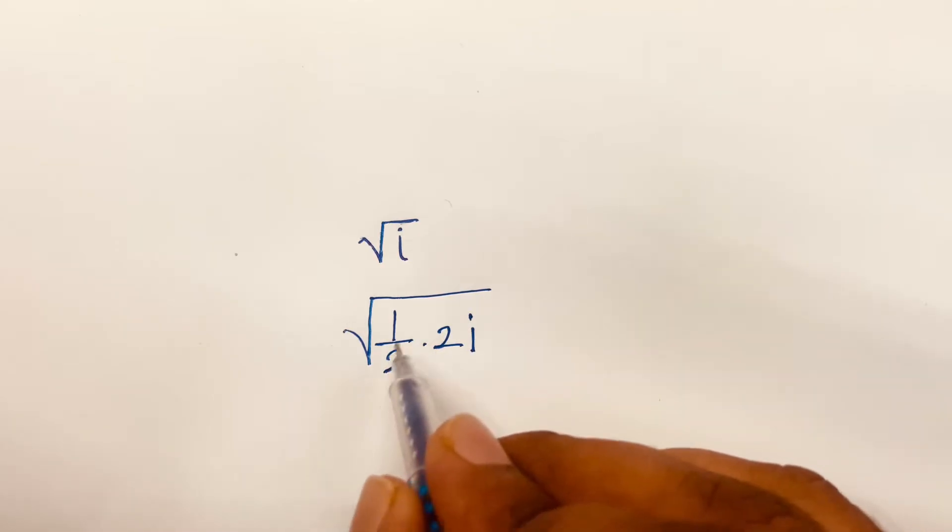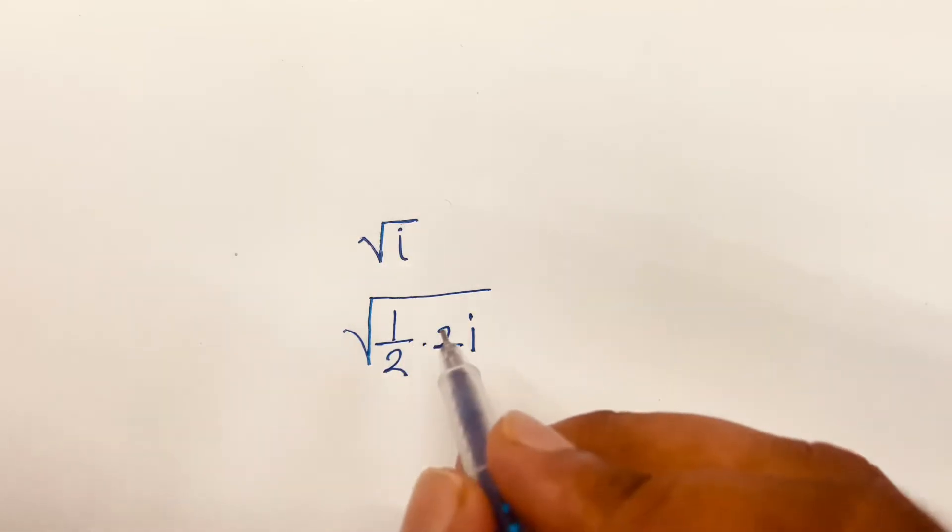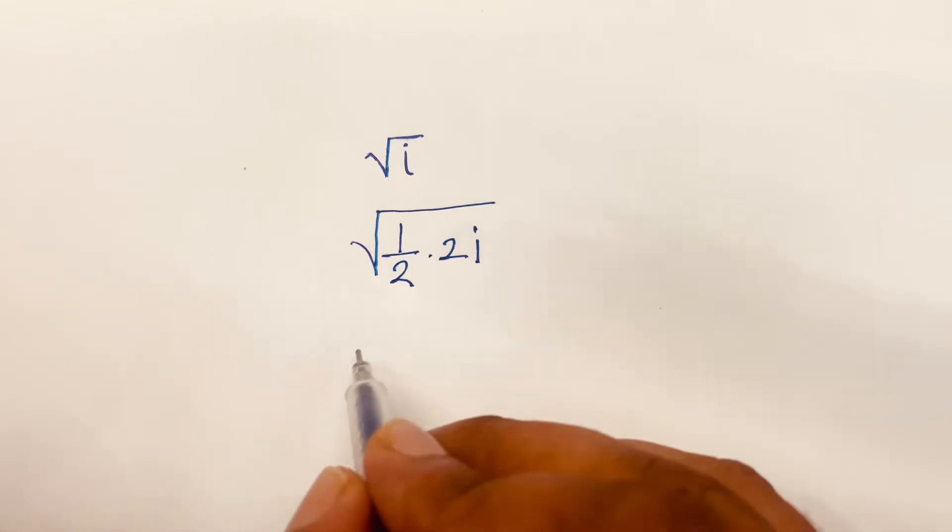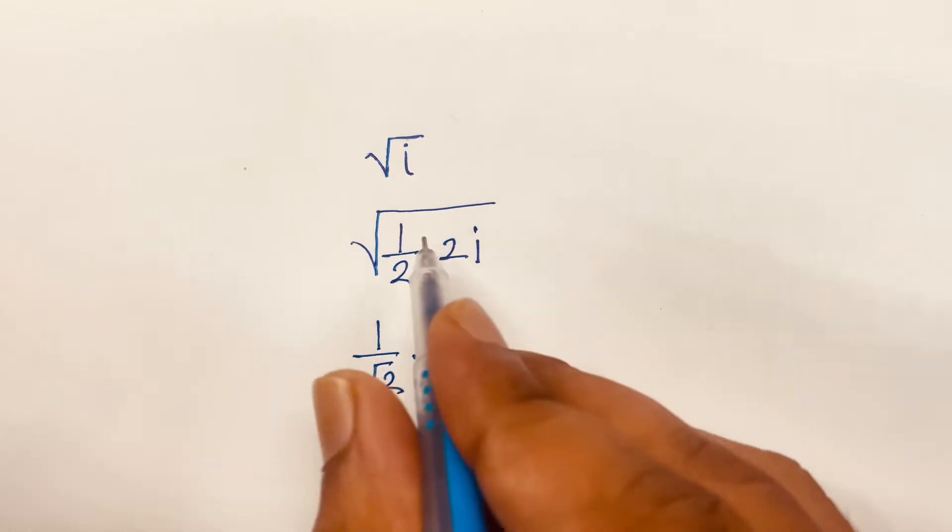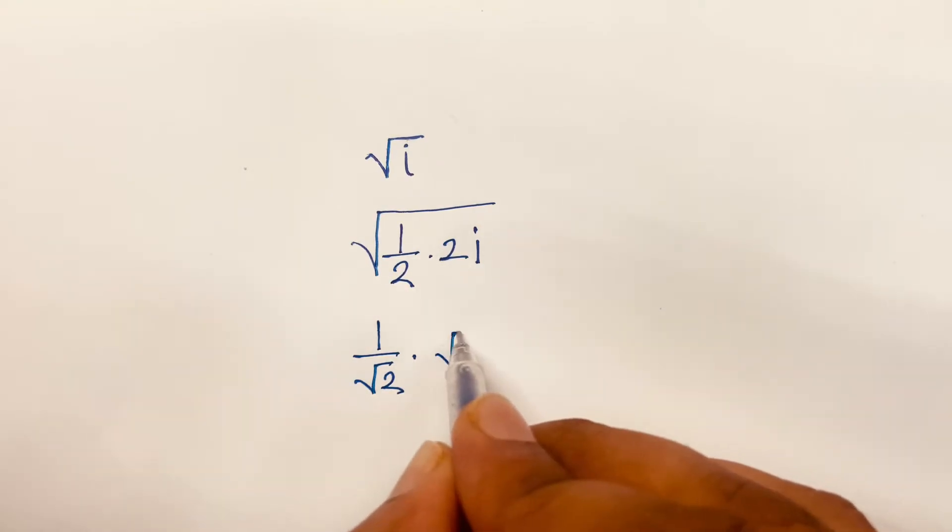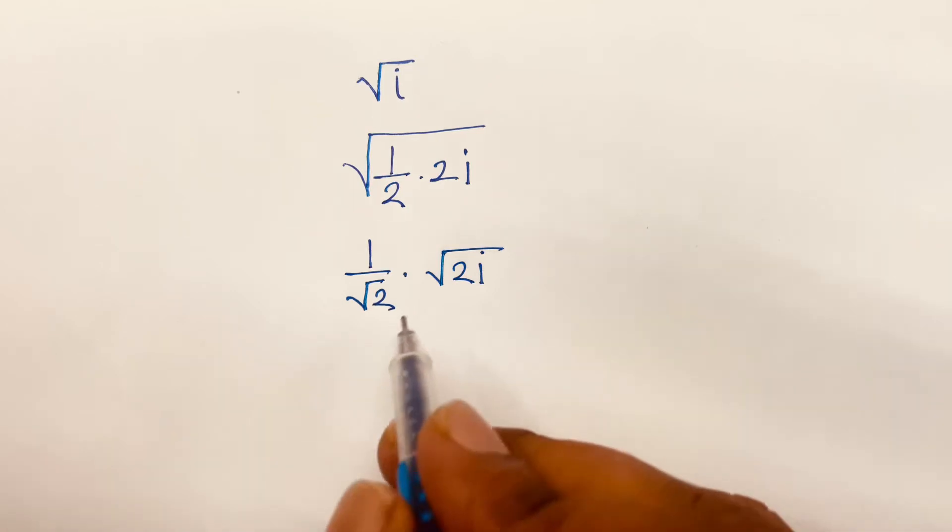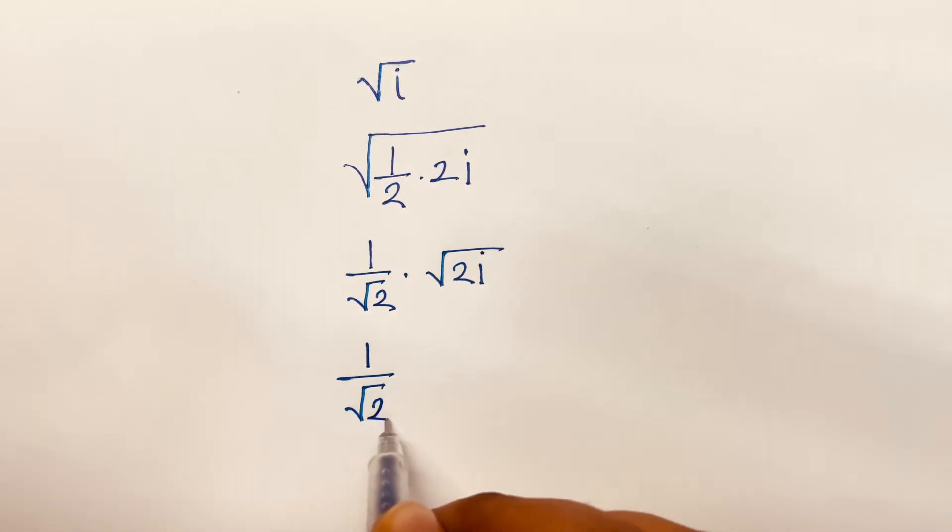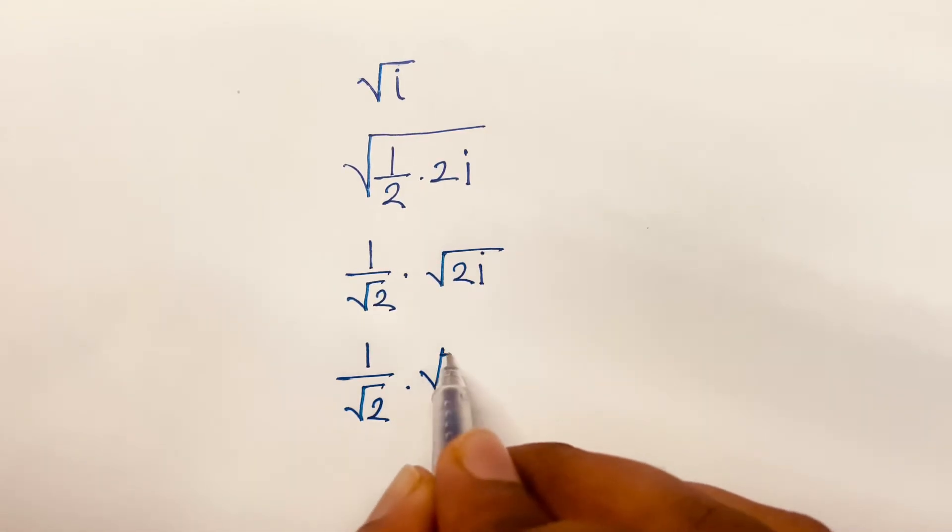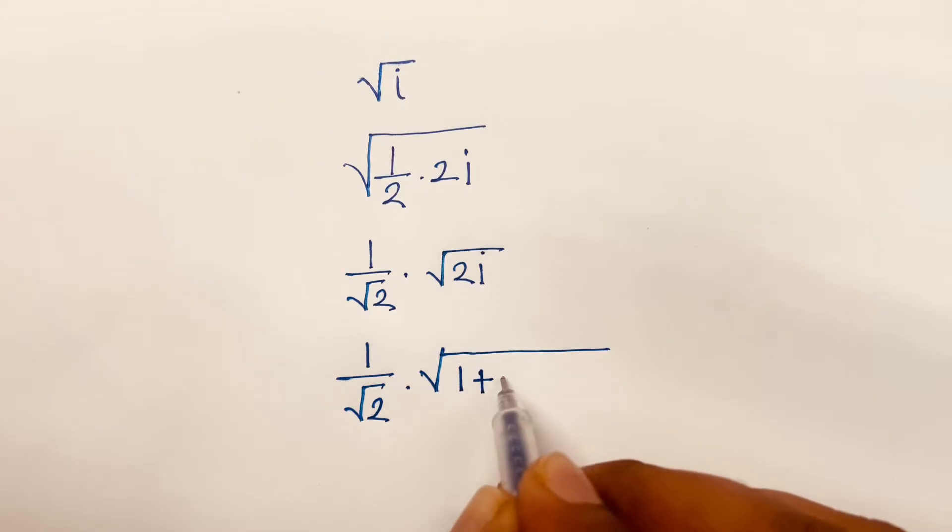Look, 2 to cancel, so we will find out again this line. And it will be 1 over square root 2 times square root 2i. Then, I can say here is 1 over square root 2 times square root, it will be 1 plus 2i minus 1.